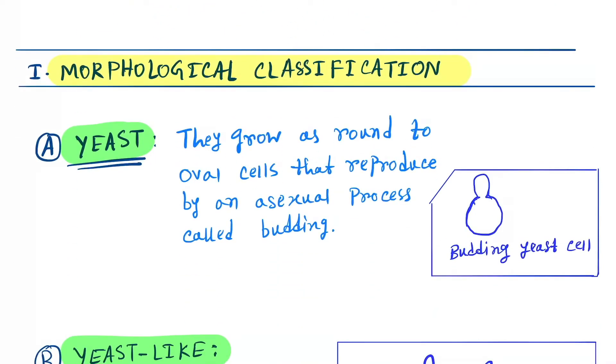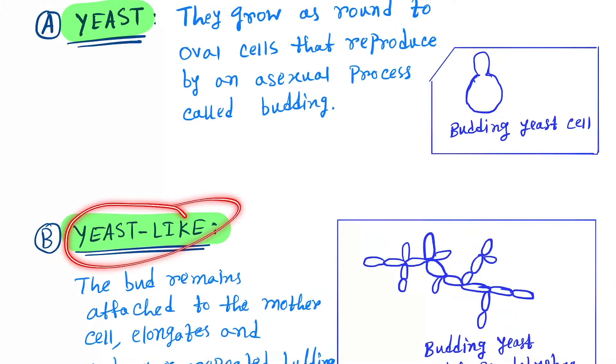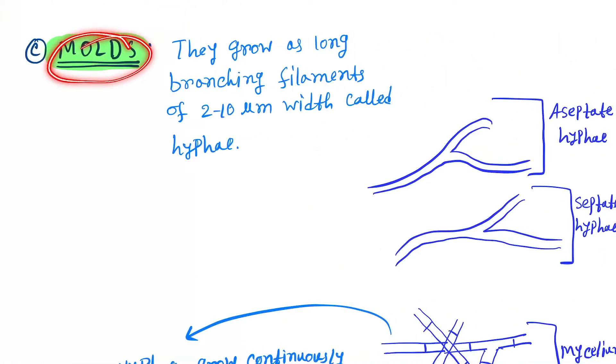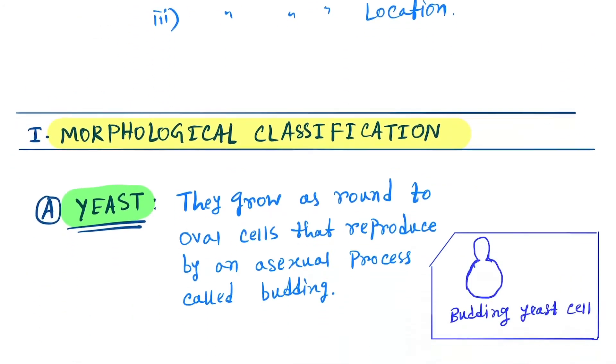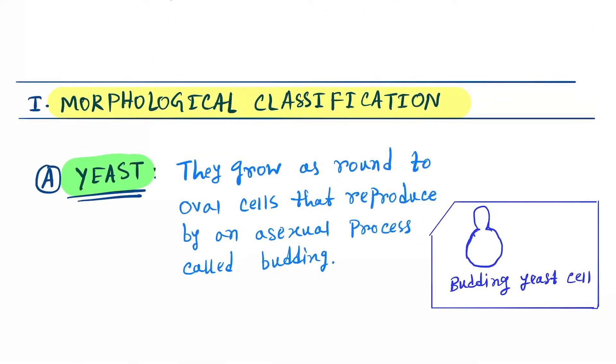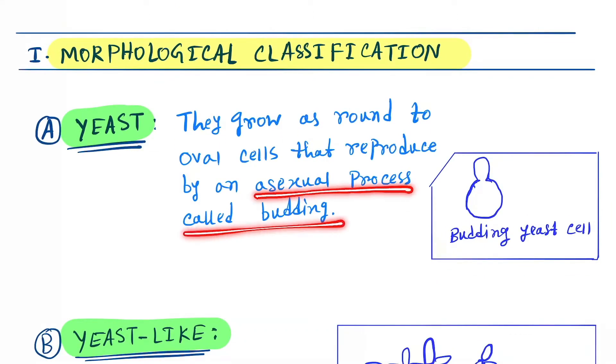Morphologically, they are classified as yeasts, molds, and dimorphic fungi. Let's see what is yeast. They grow as round to oval cells that reproduce by an asexual process called budding. Here you can see the formation of bud.